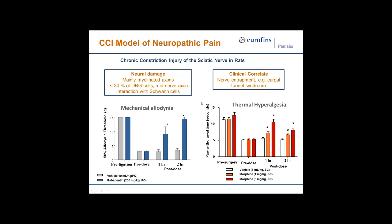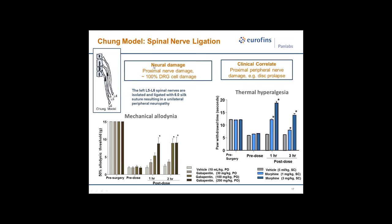The Chung model is another mainstay nerve injury model where neural damage is caused in proximal nerve areas with nearly all DRG cells being damaged. The clinical correlate is proximal peripheral nerve damage such as prolapsed discs. Note that the spinal nerve ligation SNL model is not interchangeable with the Chung model — the Chung model also includes ligation of L6, which innervates a portion of the plantar surface. Mechanical allodynic thresholds are reversed dose-dependently by gabapentin, and morphine works in the Hargraves model.